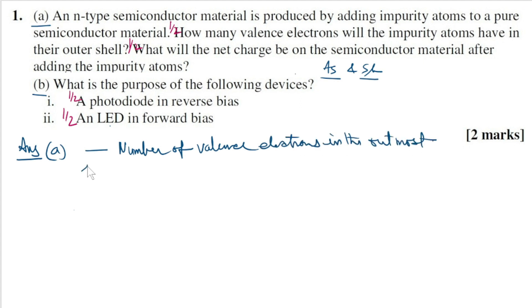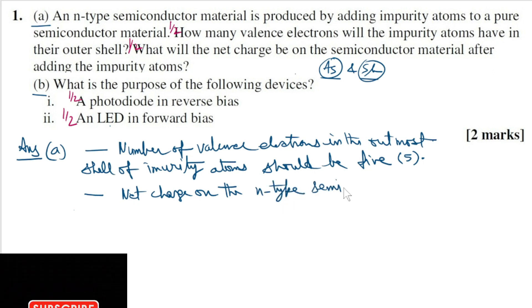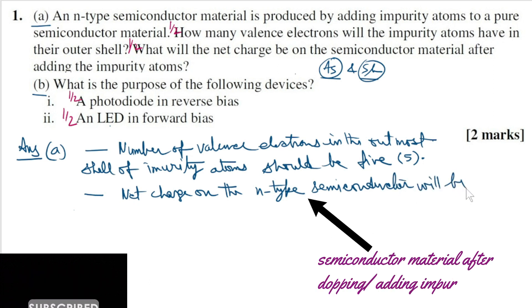The second subpart of this question: What is the net charge on the semiconductor material after adding the impurity atoms? The idea is intrinsic semiconductor is neutral, and the dopant atoms are also neutral, and hence the n-type semiconductor should also be neutral. Thus, the net charge on the n-type semiconductor will be zero. N-type semiconductor should be neutral.